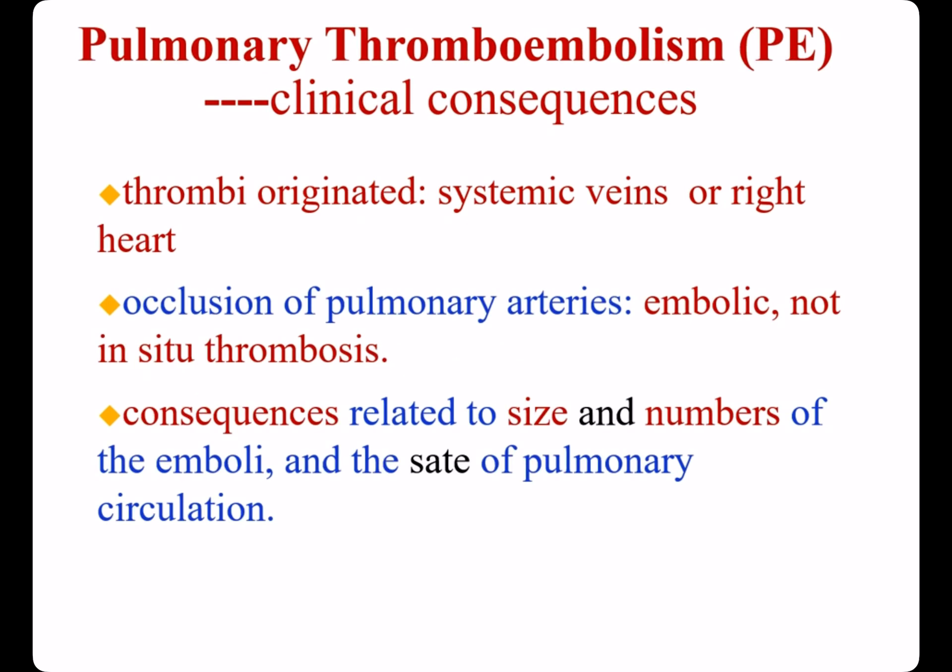The clinical consequences of pulmonary thromboembolism: thrombi originate from systemic veins or the right heart, with 95% from deep leg veins above the level of the knee. Occlusion of pulmonary arteries is almost always embolic, not in situ thrombosis.